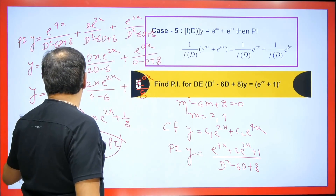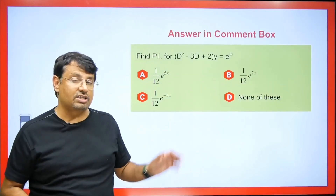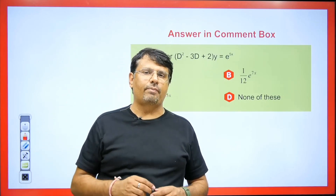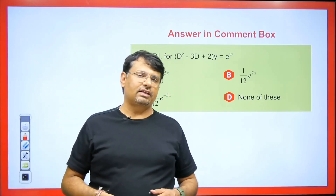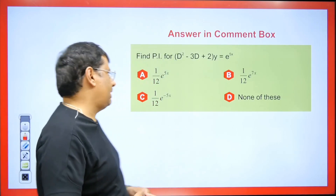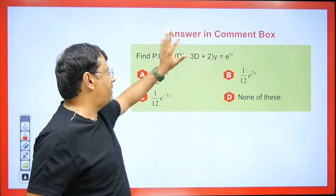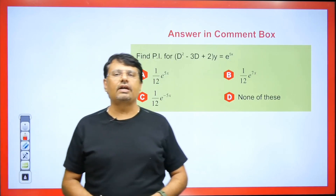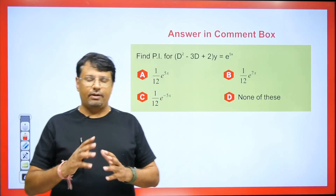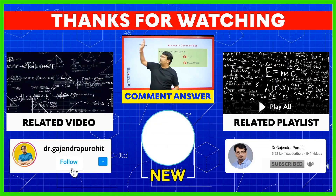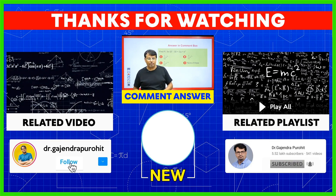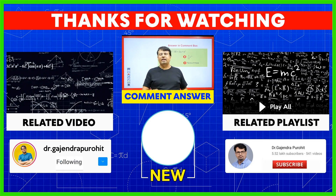Today I explained how to find the particular integral when the right-hand side is e^(ax). In the next session, I will explain PI for sine and cosine functions, then PI for a function of x, and then PI for product functions. As a practice question: given a differential equation with e^(5x) on the right, how quickly can you find the PI? Answer in the comments with the correct option. Please like, share, and subscribe, and follow my Instagram as well.